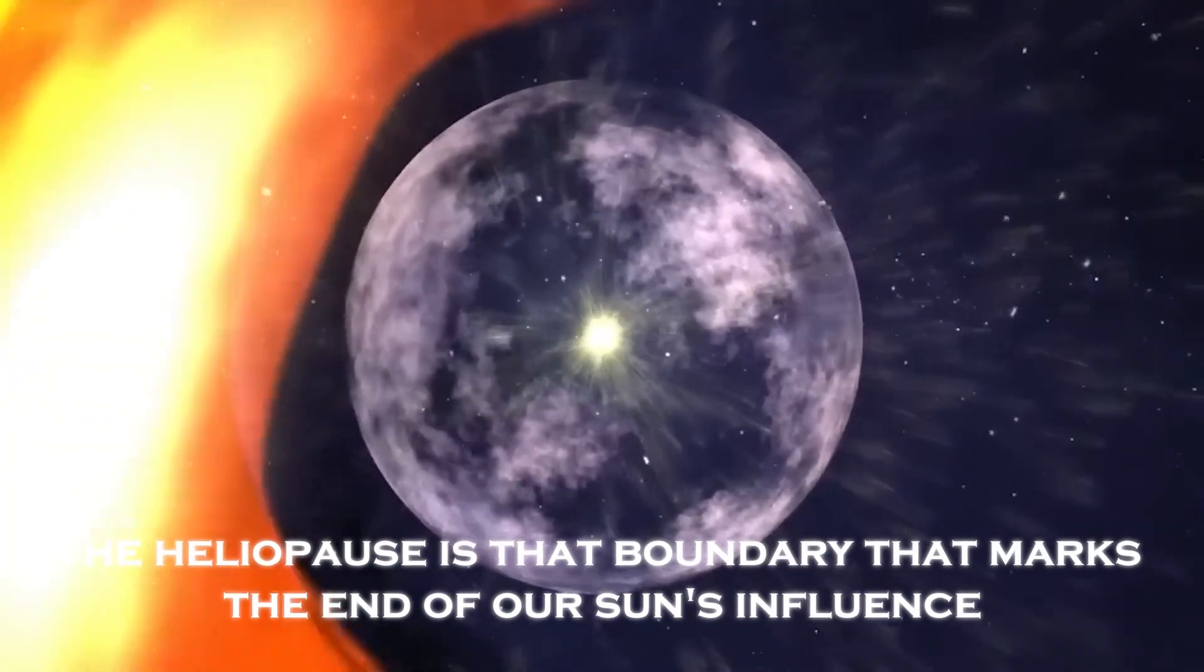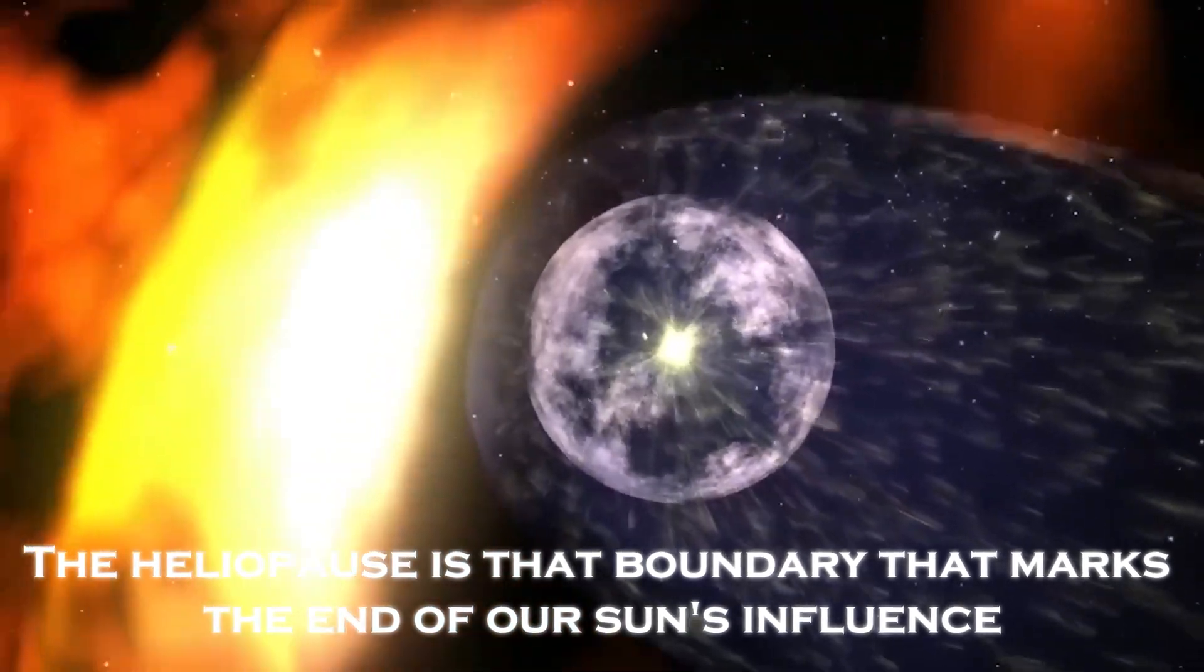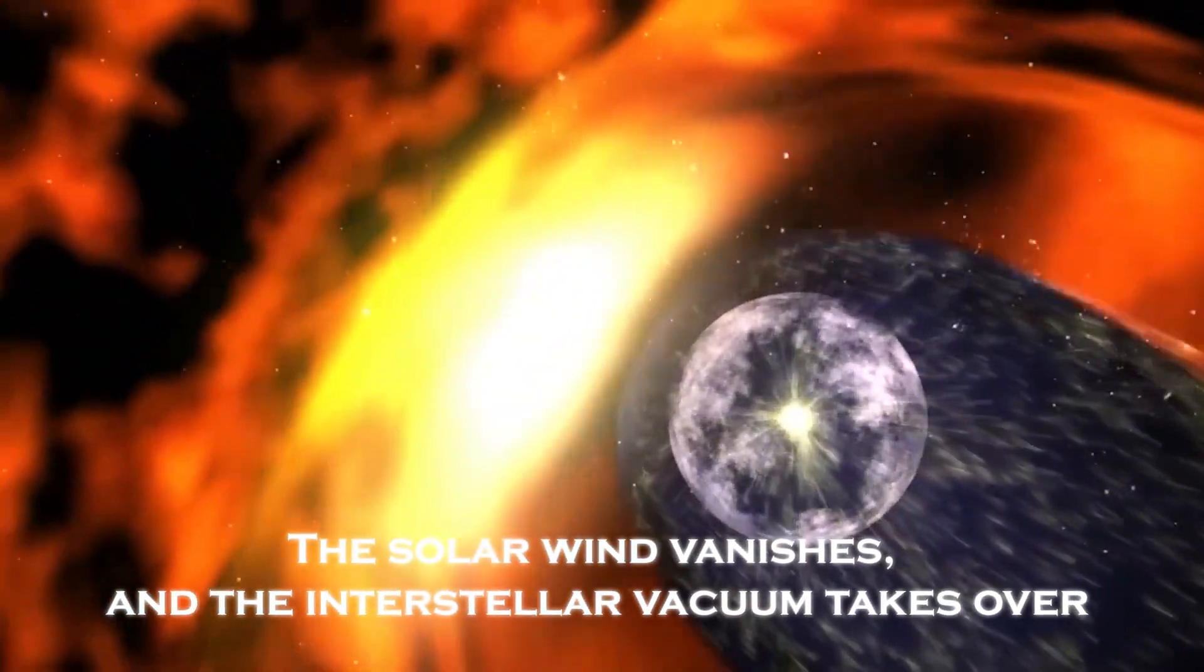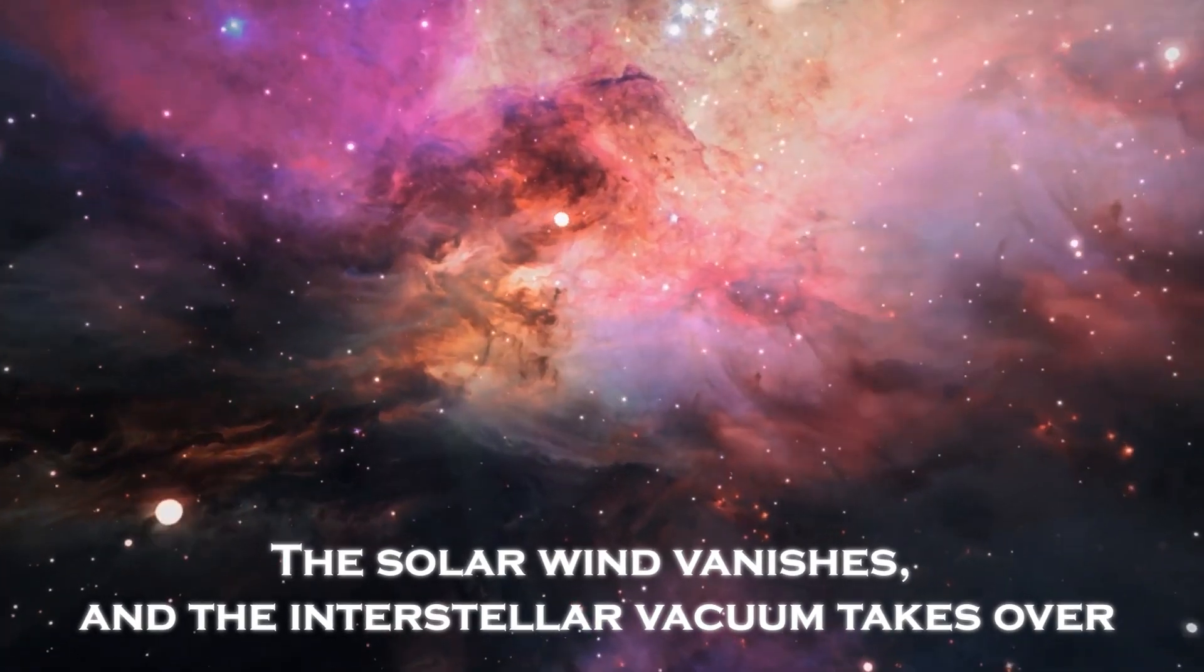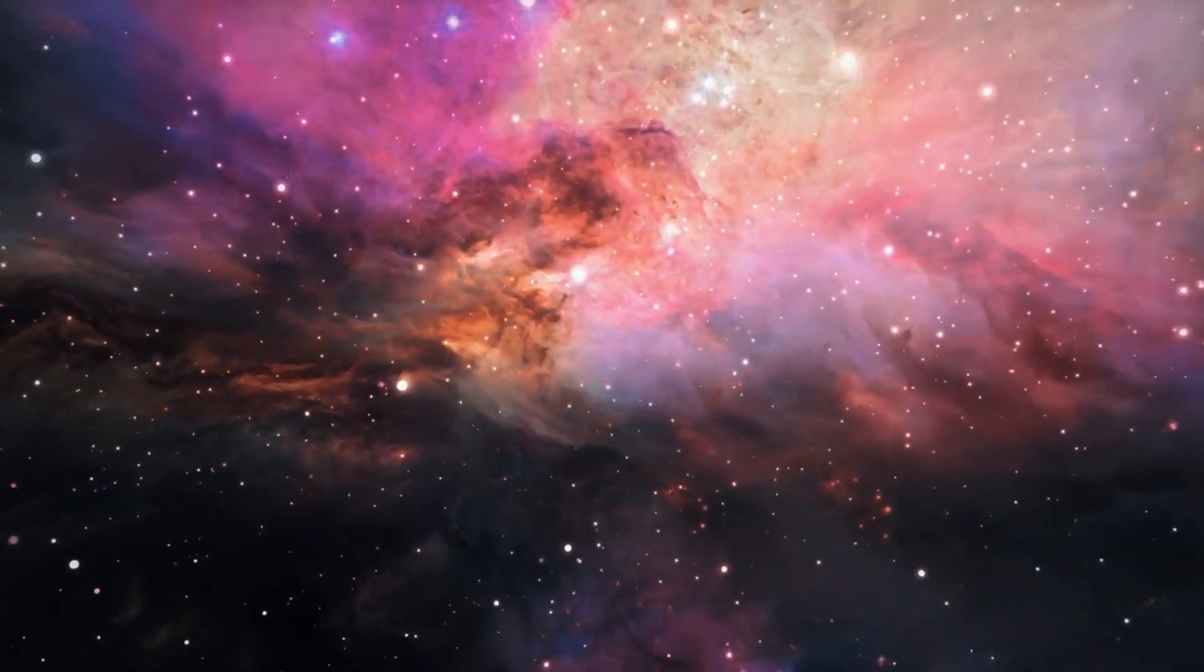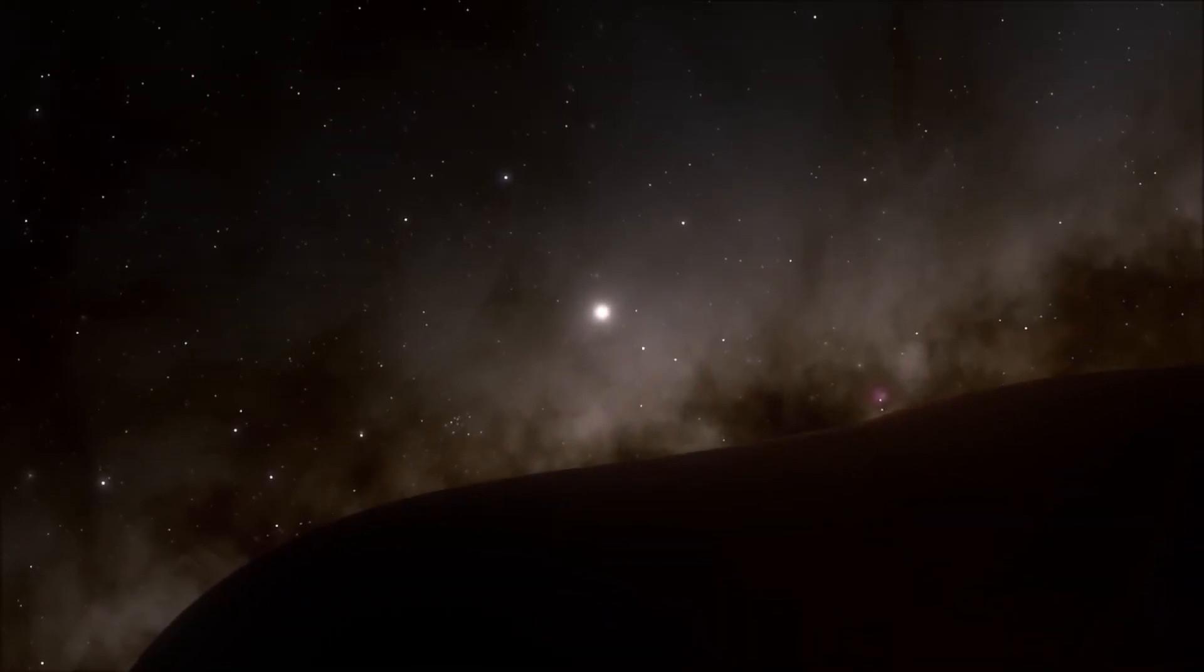The heliopause is that boundary that marks the end of our sun's influence. Beyond this barrier, the solar wind vanishes and the interstellar vacuum takes over. But what does it really mean to cross this boundary? What lurks on the other side?